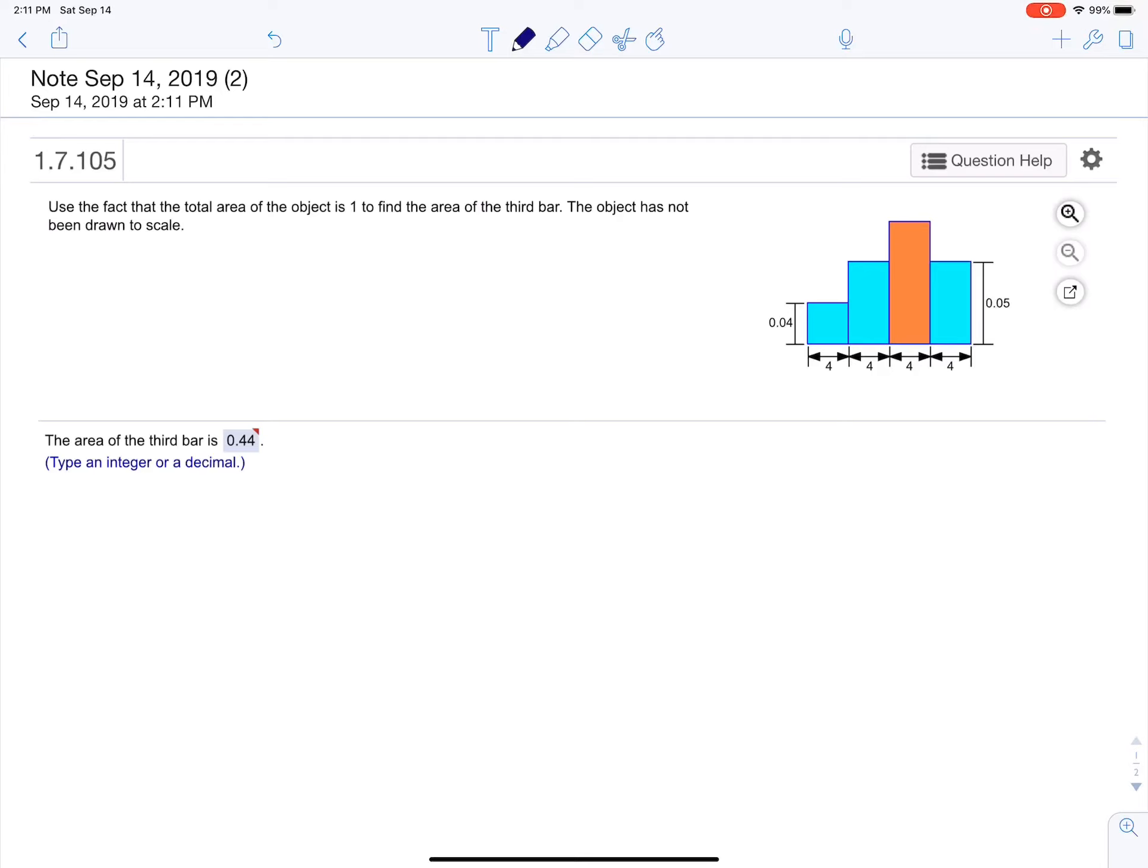Okay, so I see we don't know the height of the red bar, so we're going to have to use the complement idea, the complement. Right, so we're going to find the area of all the blue bars and then subtract that from one.